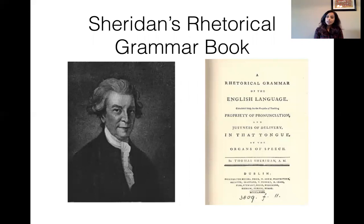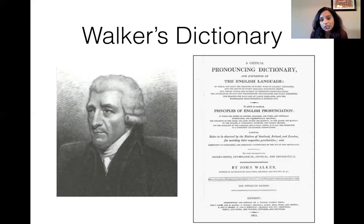This is 'A Rhetorical Grammar of the English Language, Proprietary Pronunciation and Justness of Delivery in That Tongue by the Organs of Speech,' by Irishman Thomas Sheridan. And here is John Walker's pronouncing dictionary — 'A Critical Pronouncing Dictionary and Expositor of the English Language.' I'll let you pause the video to read the rest of the title.